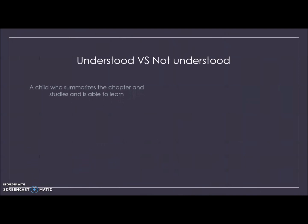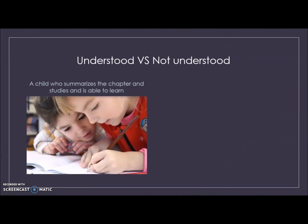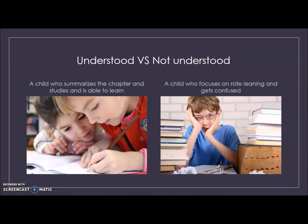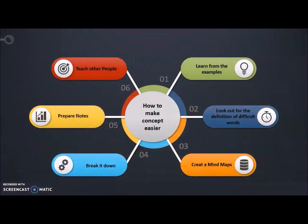Now I am going to show you a difference between two children. The first picture shows a child who is able to summarize the chapter, is able to learn, and is focusing. The second picture shows a child who is not able to summarize the chapter, is unable to focus, and gets confused. So I will tell you how you can make the concept easier.